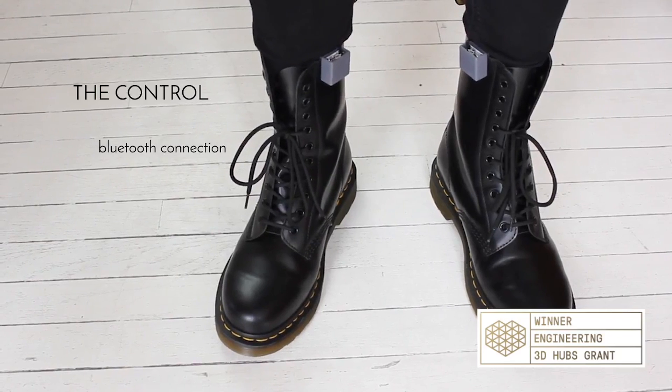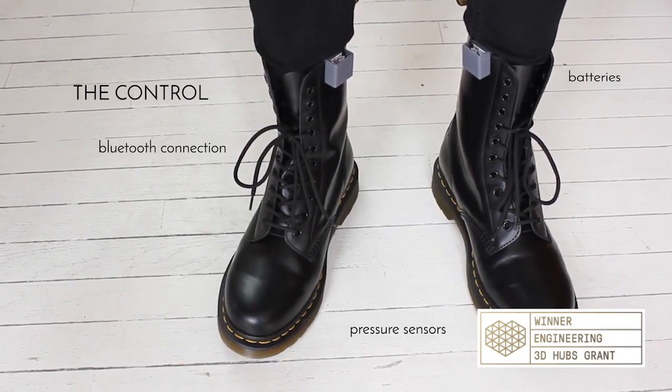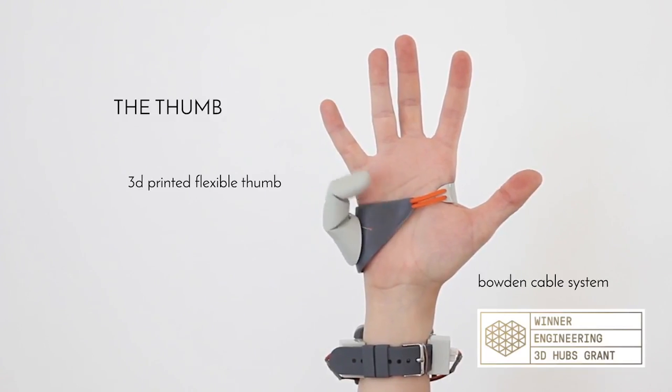The thumb is controlled with the Bluetooth sensor located in the wearer's shoe. The signal is sent to the motors on the wrist to move the prosthetic.